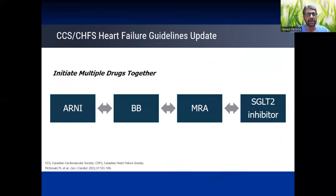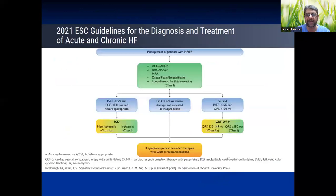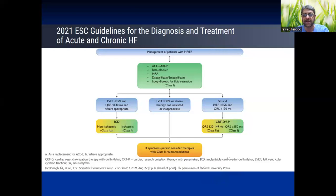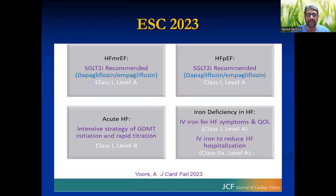But nowadays, we are advocating that every patient should be on these four drugs as early as possible. This is the way to go about it — a diuretic, specifically a loop diuretic, according to the volume status. There are further things as well; I'm just focusing on medical treatment, not going into CRT, ICD, and others.